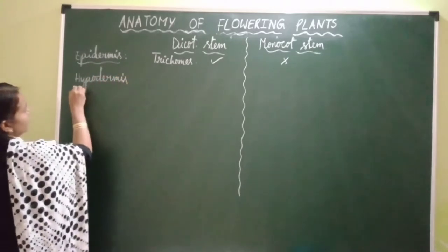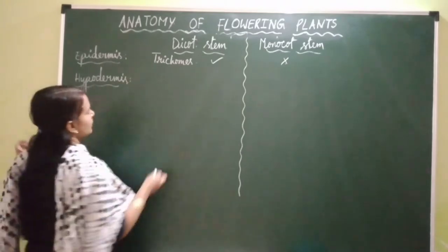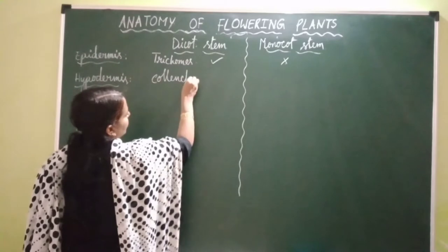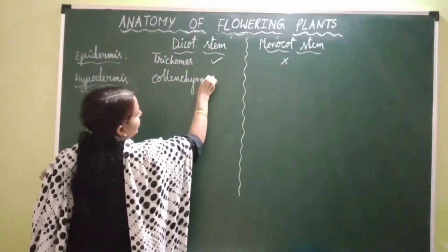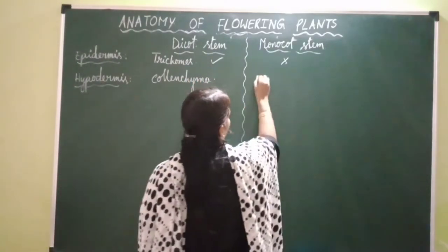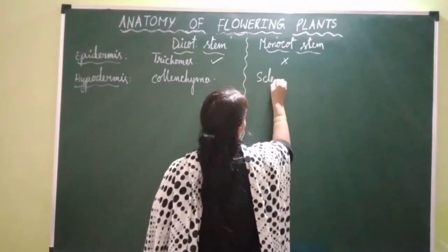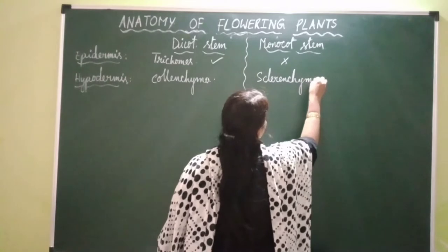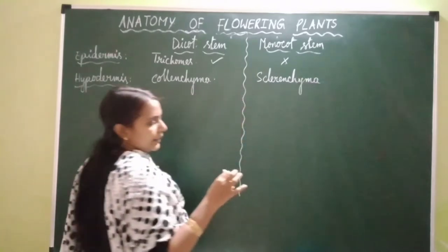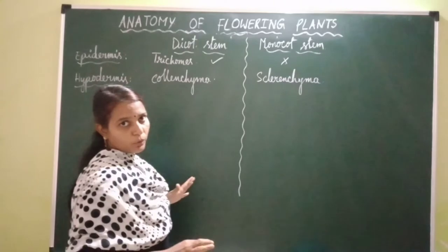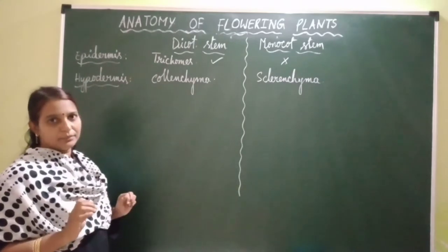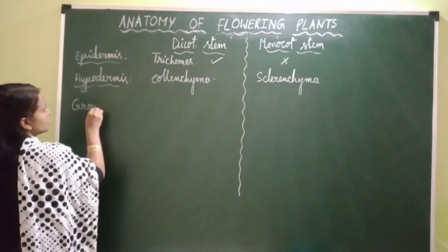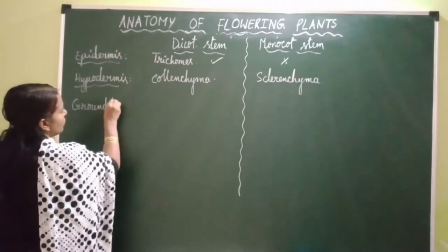Next, coming to hypodermis. In case of dicot stem, hypodermis is made of collenchyma tissue, which is involved in providing mechanical support. In case of monocot stem, this hypodermis is made up of sclerenchyma. Collenchyma is absent in the monocot plant — the entire monocot plant body lacks collenchyma.